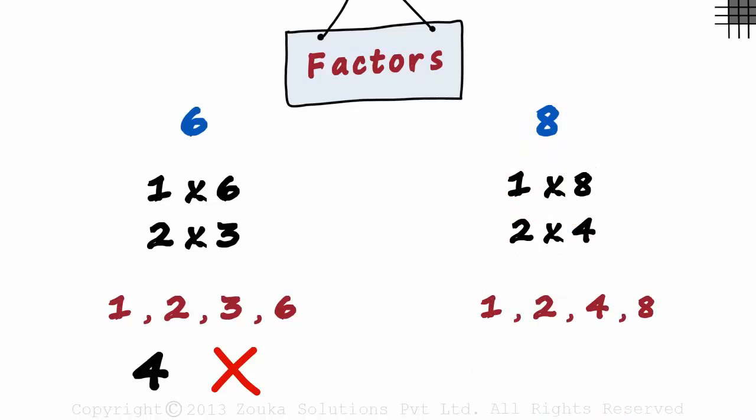This can also be seen in a different way. If we divide a number by any of its factors, the remainder will always be 0. If you divide 6 by 3, you will get 2 as the quotient.